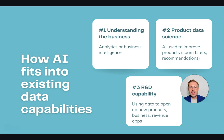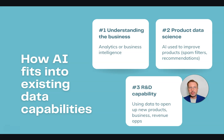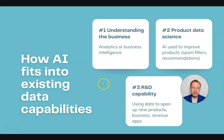There are three ways AI fits into existing data capabilities. The first is understanding the business — analytics or business intelligence — where knowledge often sits only in the C-suite, making it hard to connect with AI systems. The second is product data science — AI used to improve the product itself, such as spam filters or Netflix recommendations. The third is R&D capability — using data to open up new products, new business opportunities, and new revenue.